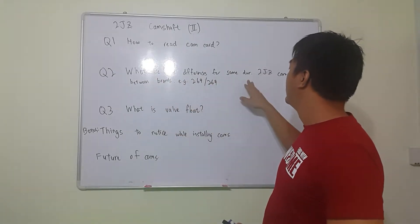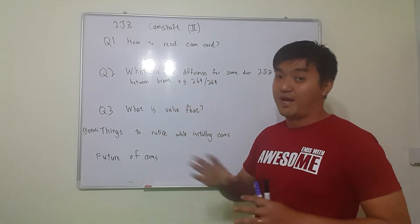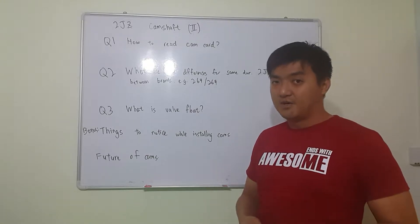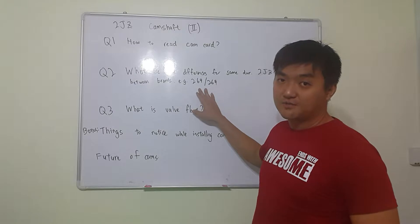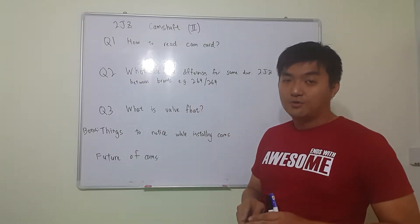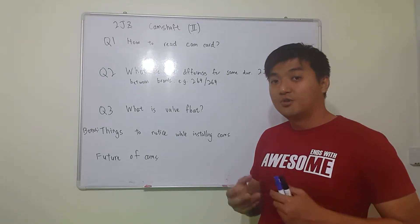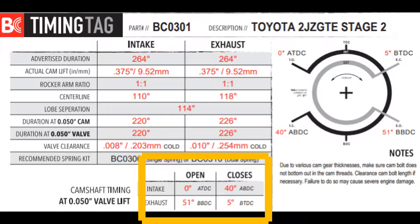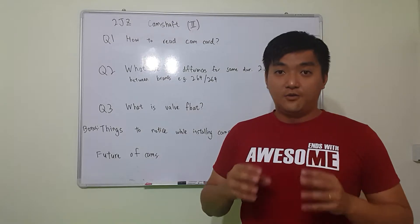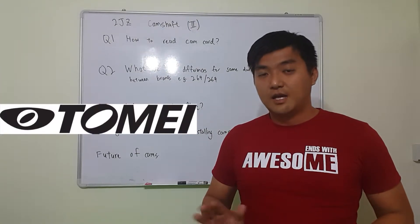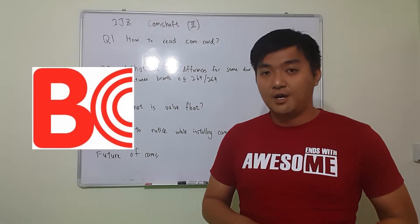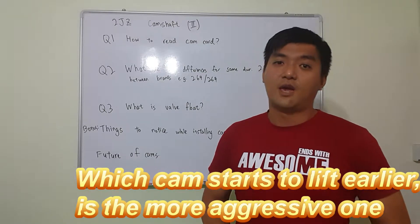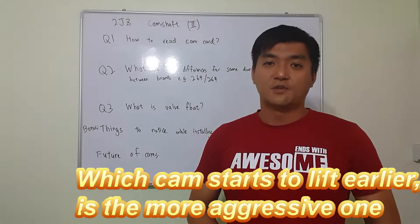What are the differences for the same duration of 2JZ cams between brands? Different brands may advertise the same duration, but what are the differences between these two cams? Of course there is a difference, but how to know it? For example, 264 and 264 cams. The key is you need to know what is the profile of those cams. How to know those profiles is you have to see what is the 0.05 inch of valve opening. If you can notice that when there are two brands, they have different degrees in this 0.05 cam lift, whichever brand that has earlier opening the 0.05 inch means it has a more aggressive cam profile. That's a trick to know what is the difference between the cams from these two brands.